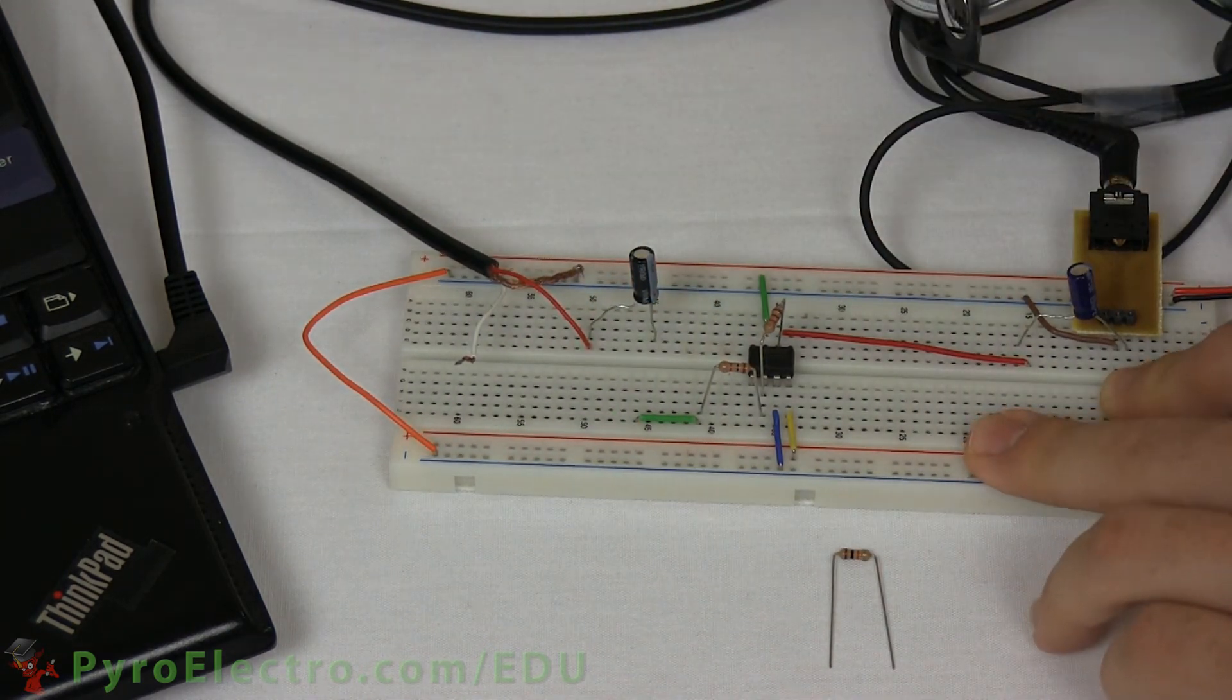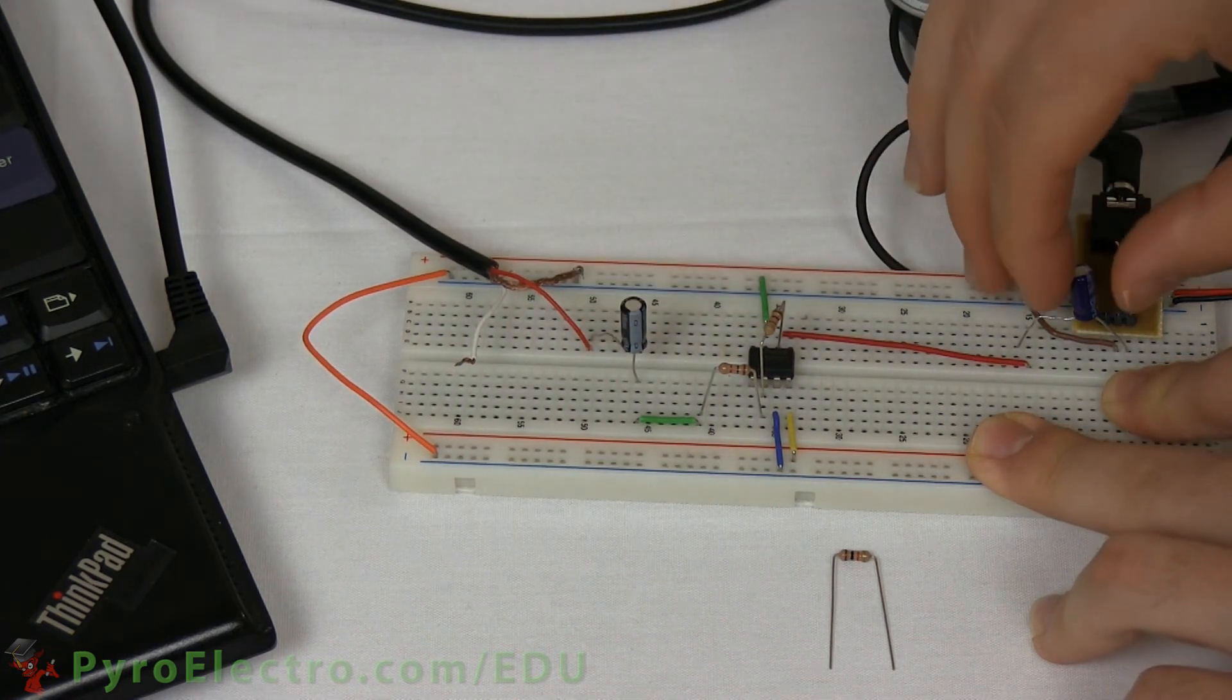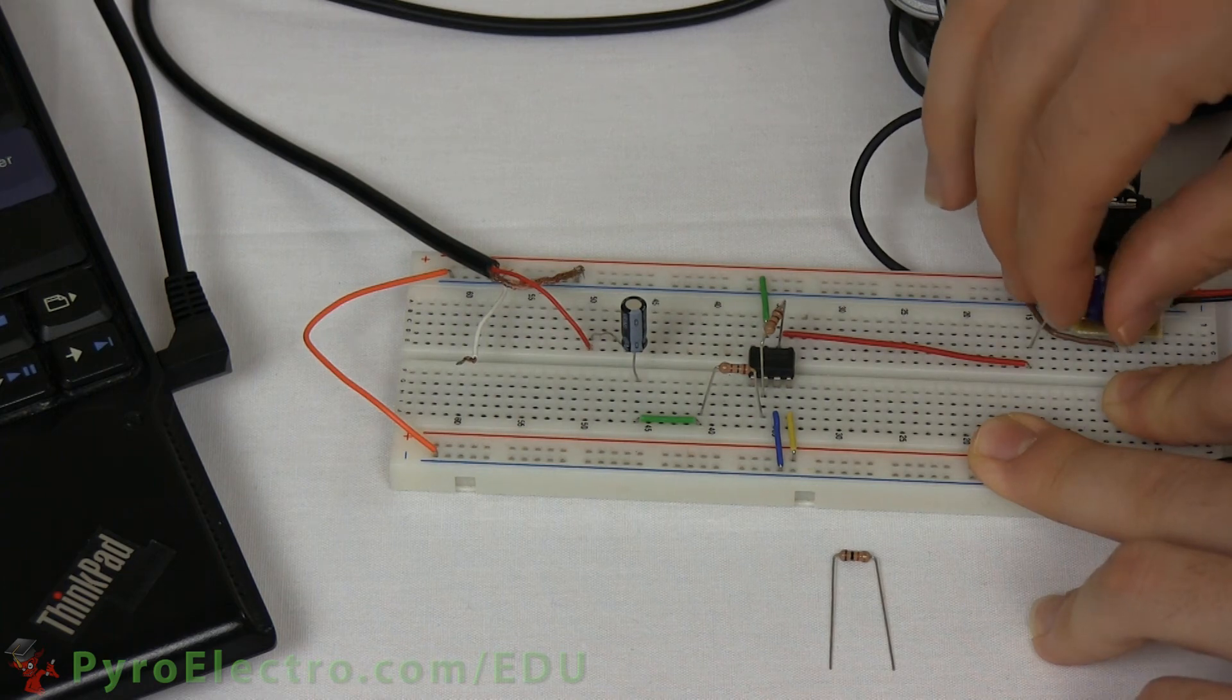Now we'll modify the circuit so that the audio signal goes through the amplifier. The sound is the same since R1 and R2 are the same value.